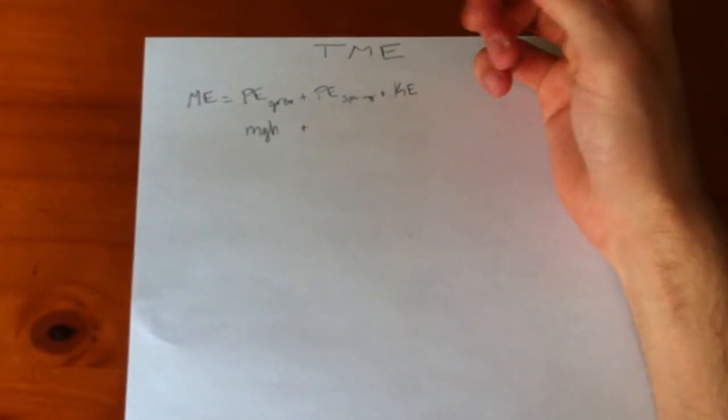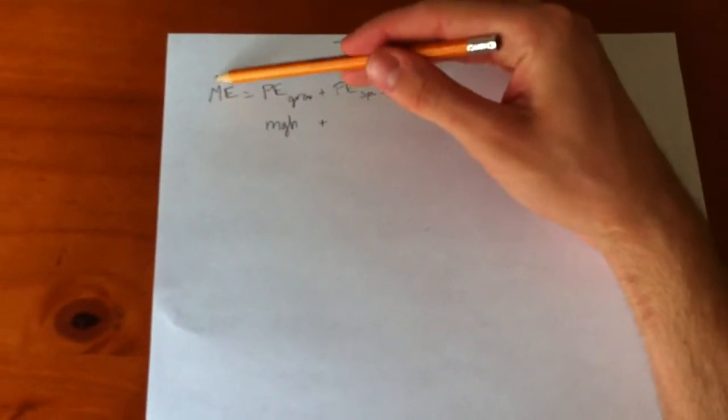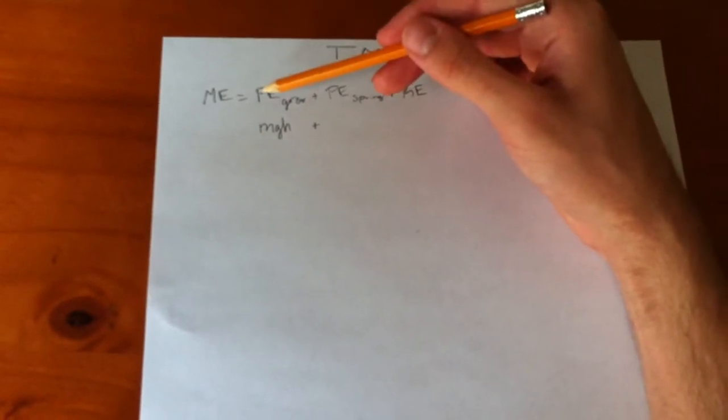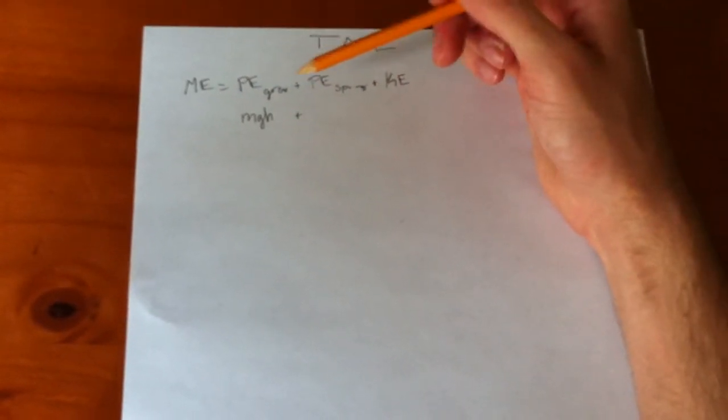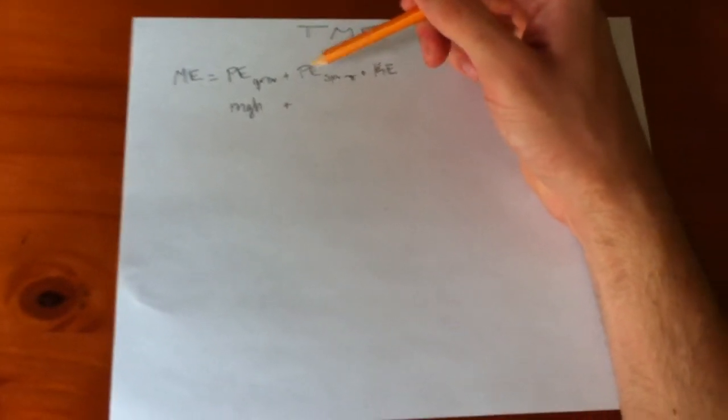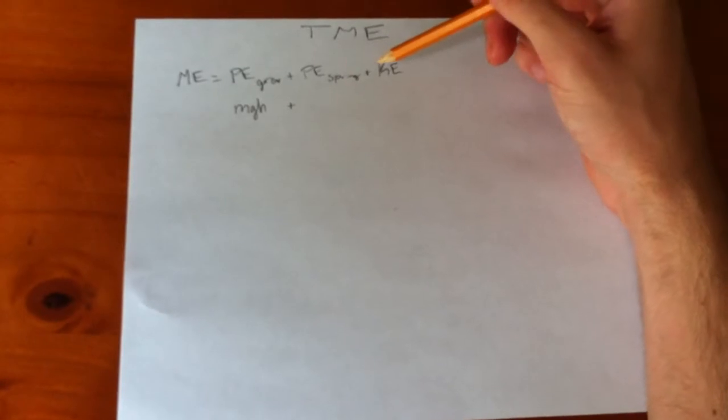The equation follows that mechanical energy equals the potential energy of gravity, gravitational potential energy, plus elastic potential energy or PE spring, plus kinetic energy.